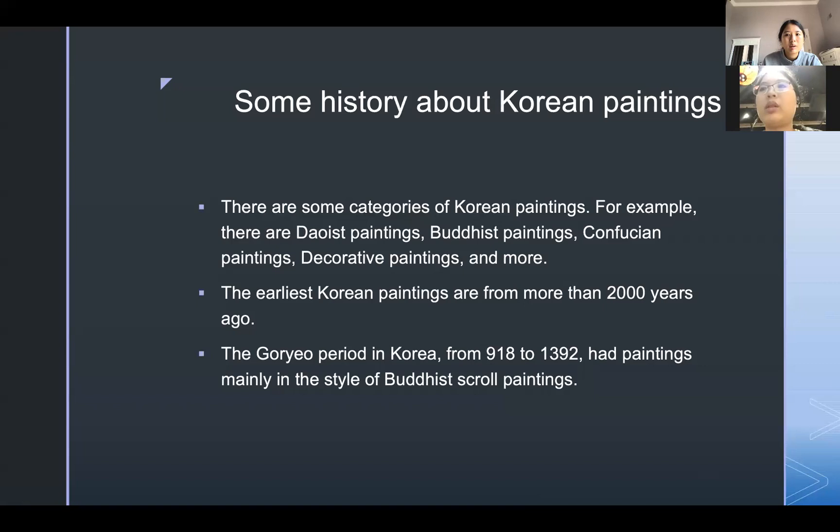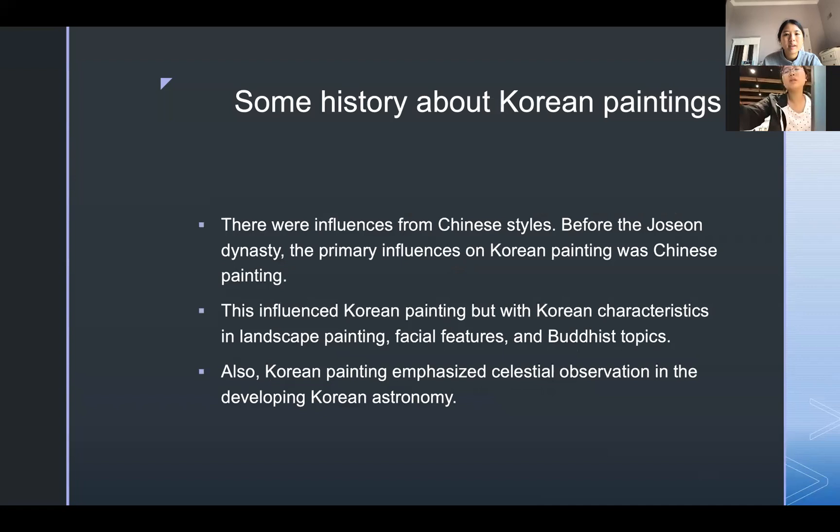The Goryeo period in Korea, from 918 to 1392, had paintings mainly in the style of Buddhist scroll paintings. There were many influences from Chinese styles.